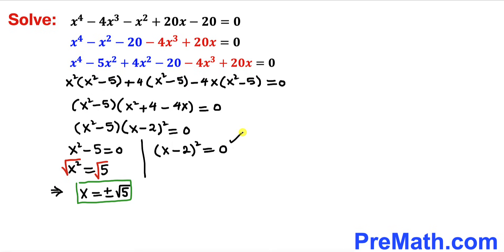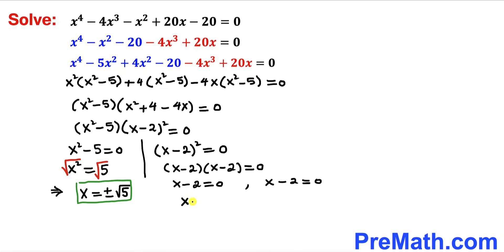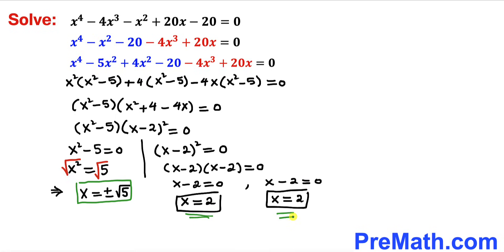For the other equation, (x minus 2)² equals 0, which means (x minus 2)(x minus 2) equals 0, so x minus 2 equals 0, giving x equals 2. This solution x equals 2 repeats twice, so we say x equals 2 with multiplicity 2.